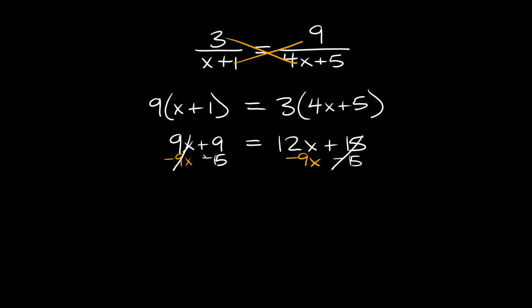Those cancel out. On this side 9 minus 15 equals negative 6, and that equals 12 minus 9 which is 3x. Then we can divide both sides by 3. Negative 6 over 3 equals negative 2, so we get that x equals negative 2.